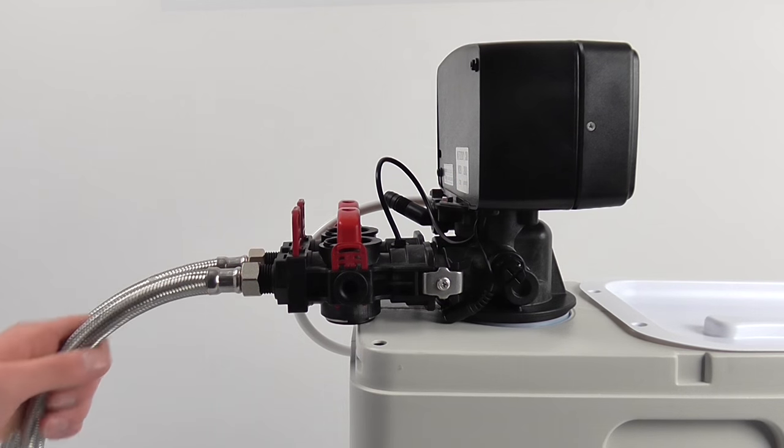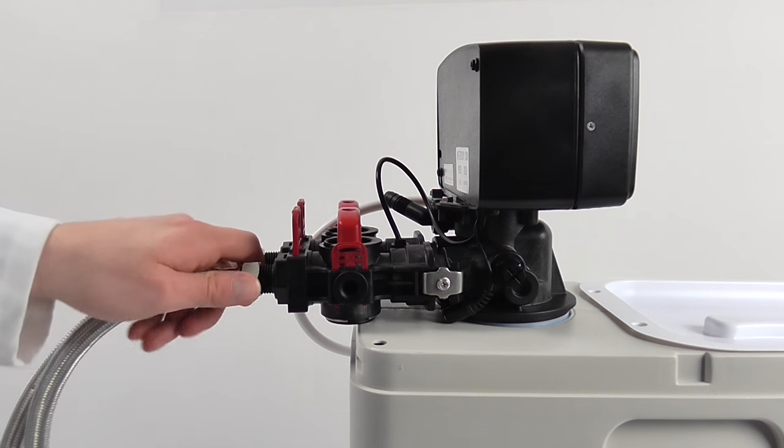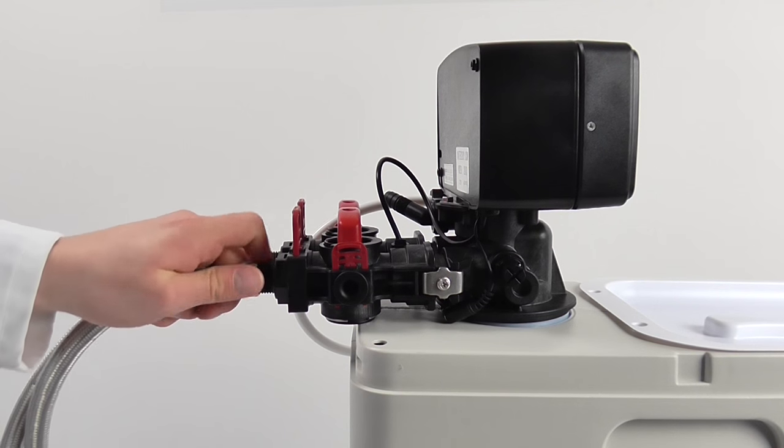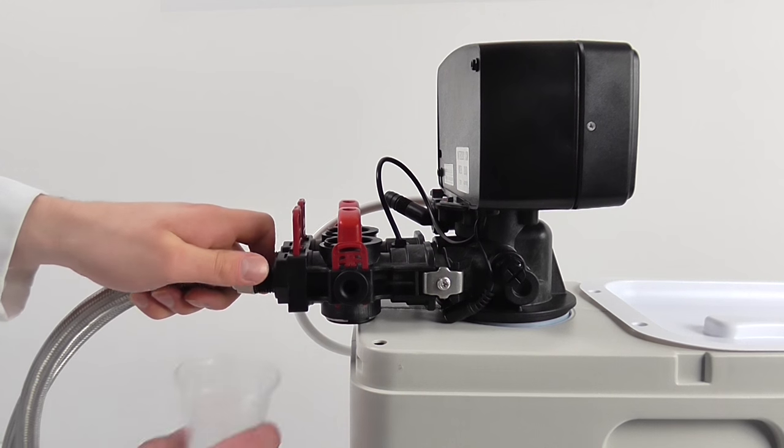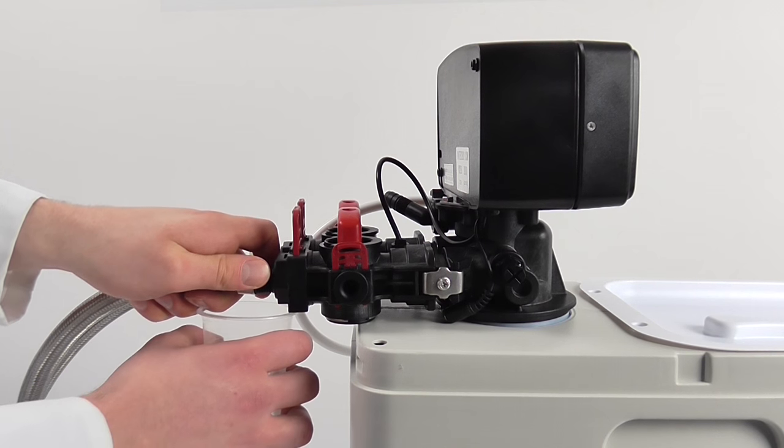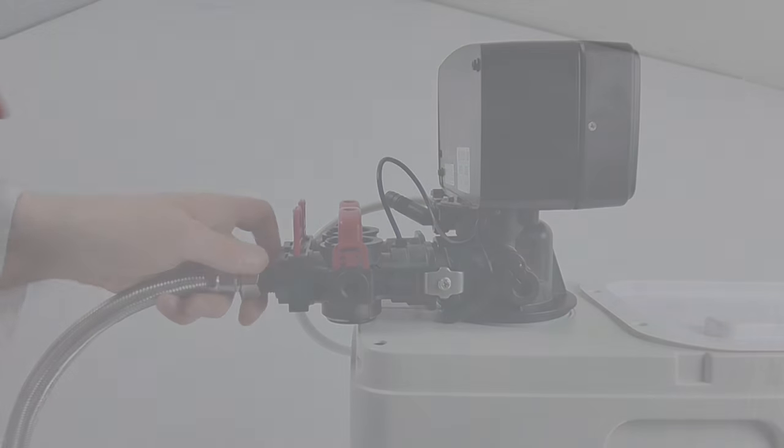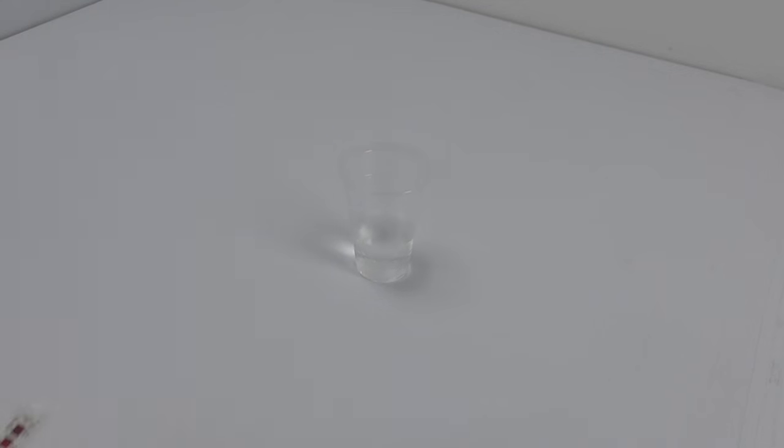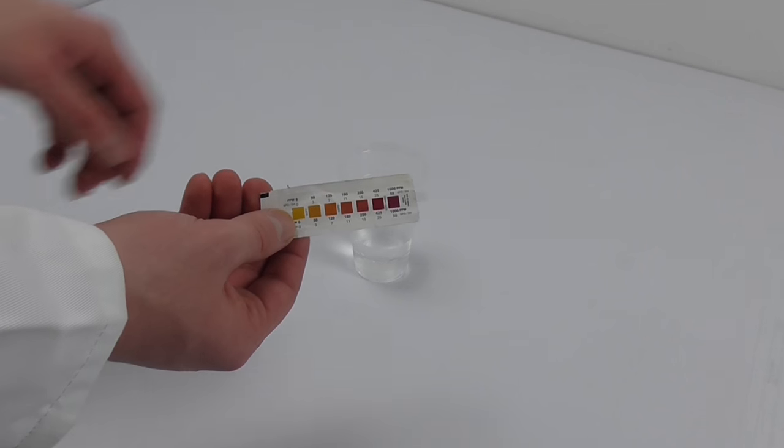The best way to determine if there is a problem with the water softener is to check your water hardness. Take a sample of water from the back of your water softener where the water flows out of the softener. This eliminates any problems further up the line. Use a water hardness test kit to make sure that you get an accurate reading.